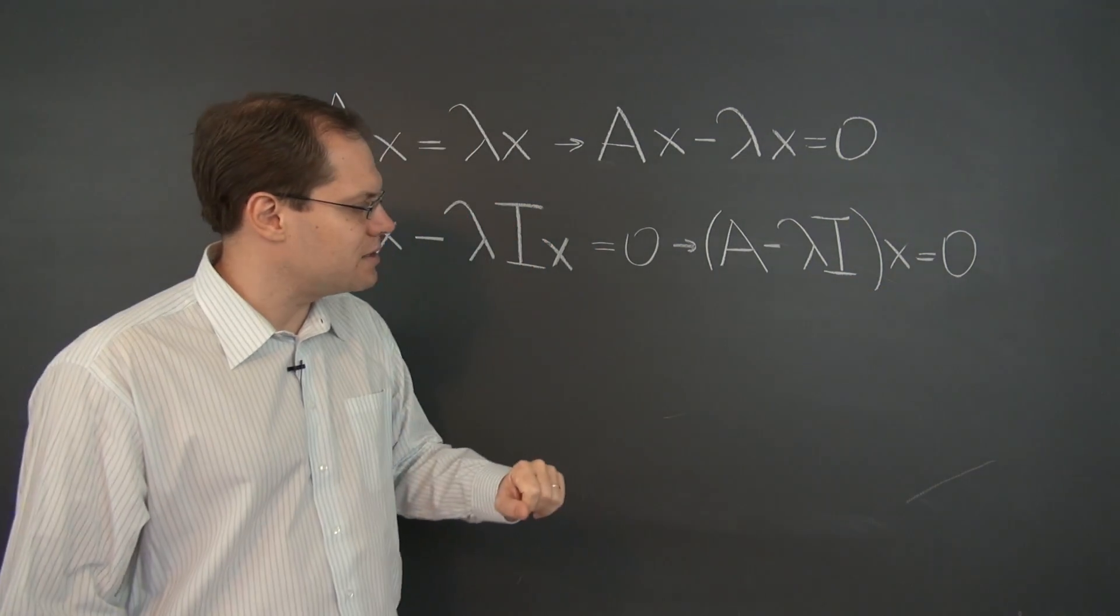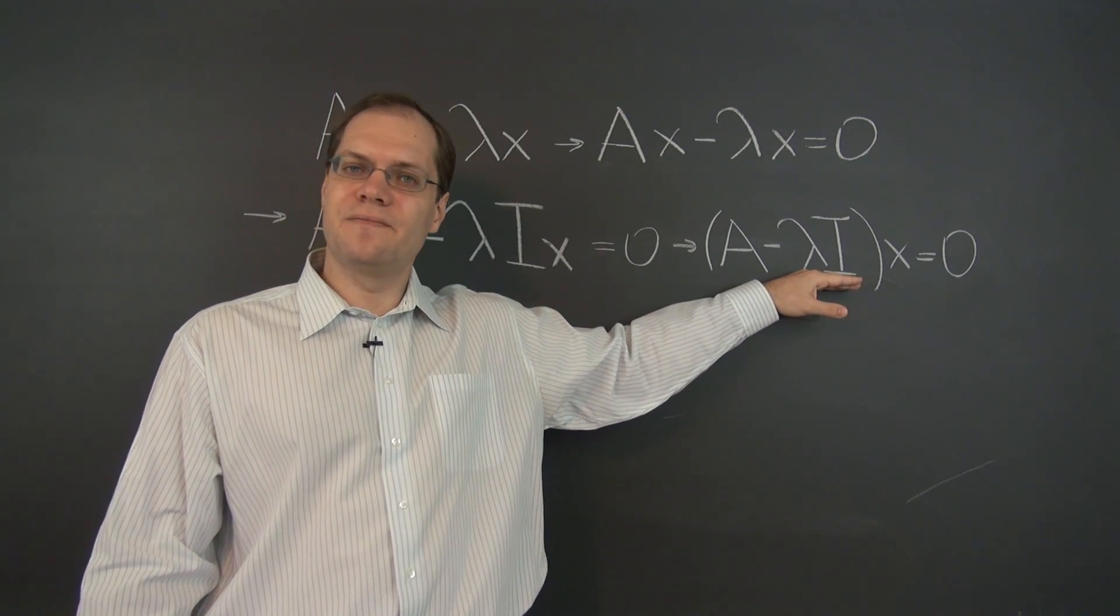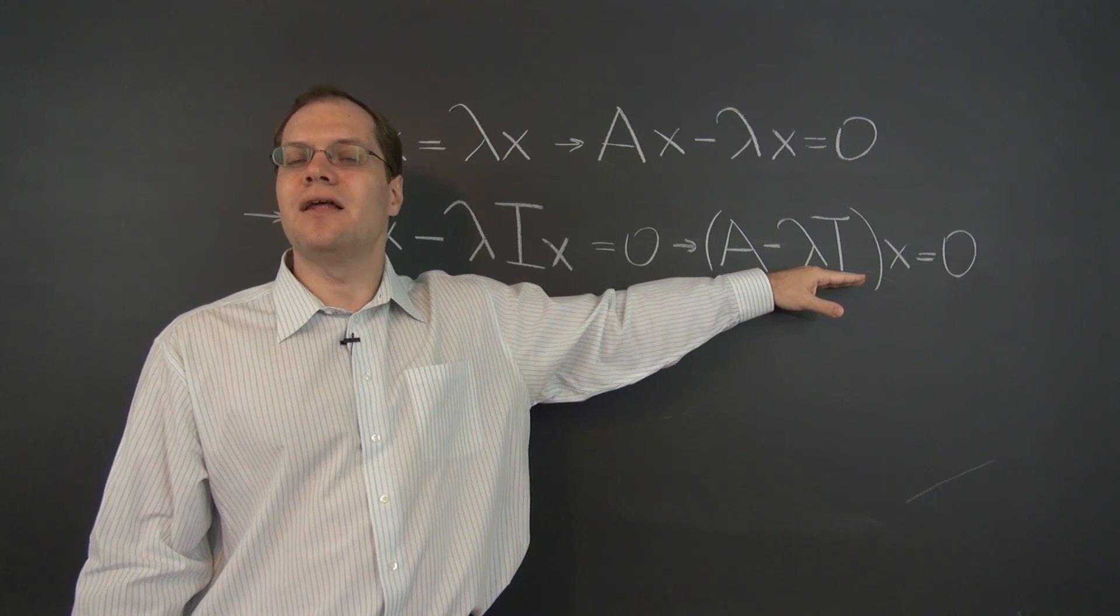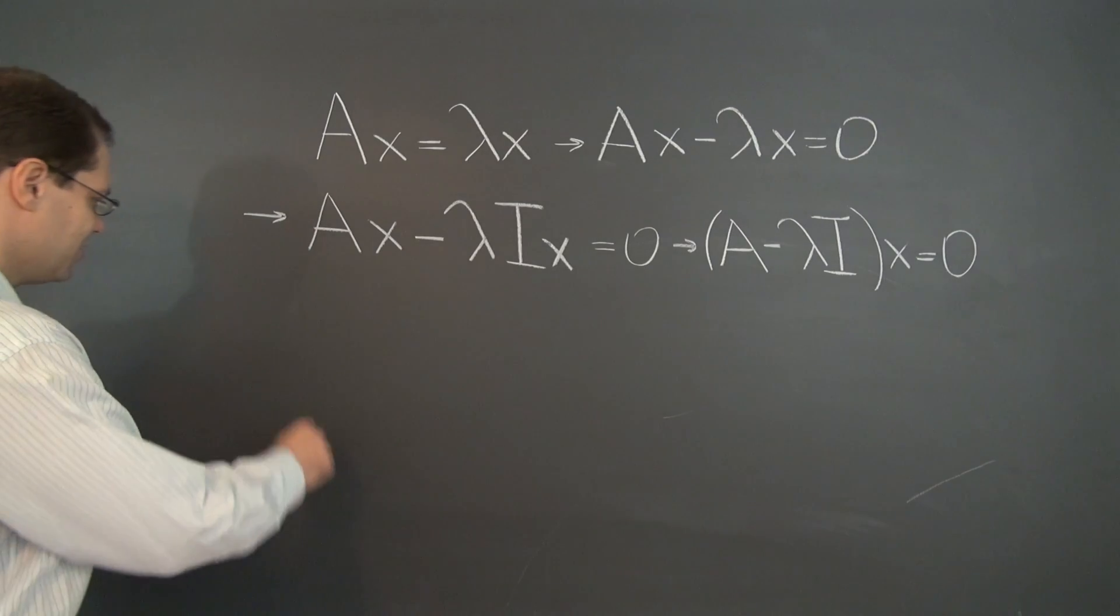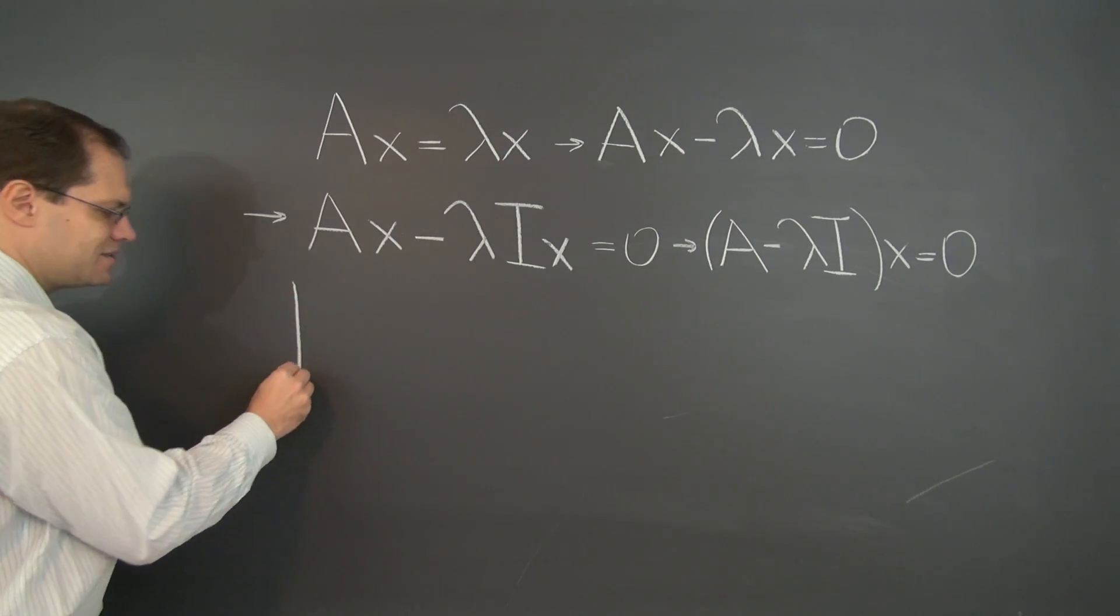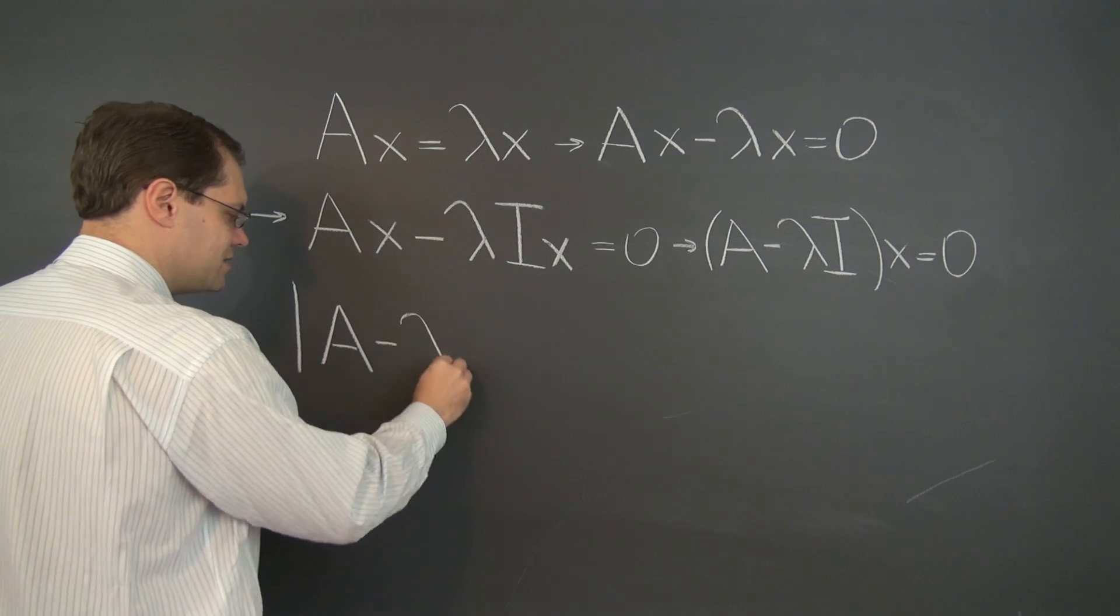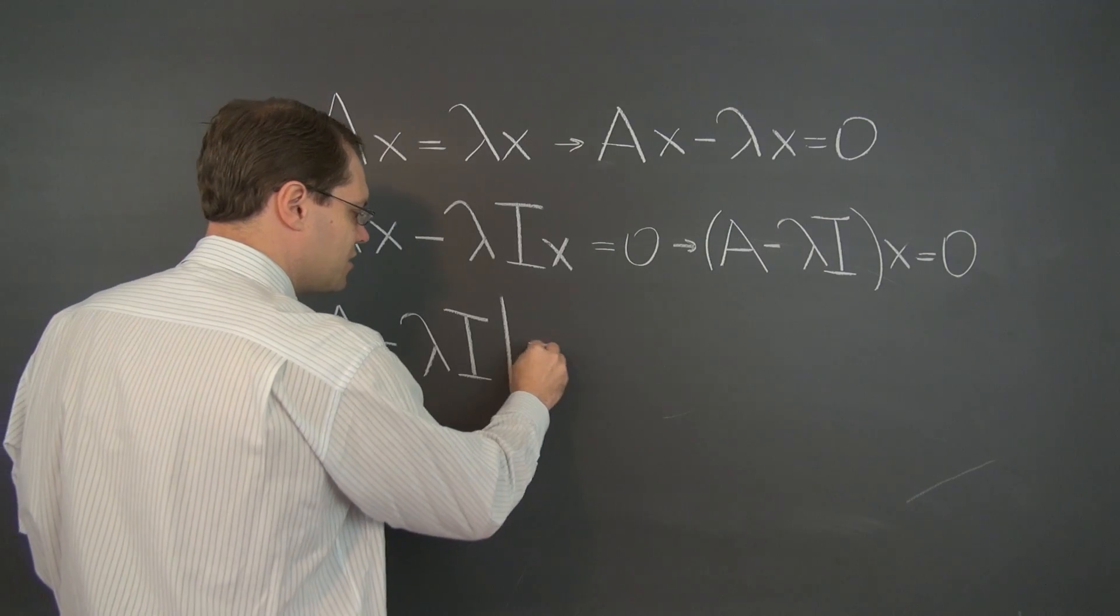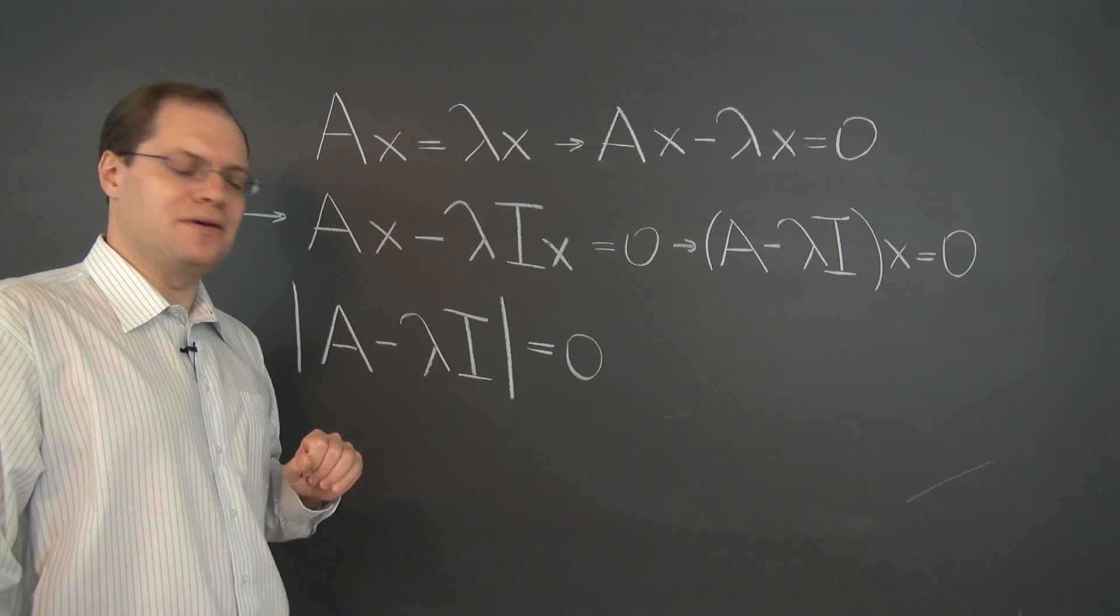And we're looking for its null space. And its null space is only interesting, non-trivial, when this matrix is singular. In other words, when its determinant equals 0, just as we discovered before. We're just rediscovering everything in different notation. So we must have det(A - λI) = 0, the number. And that provides us with a new recipe.